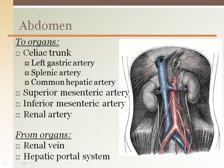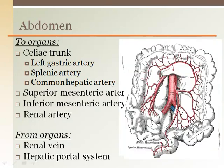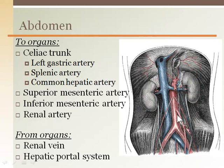From the descending aorta, blood travels toward the abdomen and becomes the abdominal aorta once it passes through the diaphragm. The first main branch off the abdominal aorta is the celiac trunk, which is only about an inch long and immediately divides into three arteries: the left gastric artery serving the stomach, the splenic artery bringing blood to the spleen, and the common hepatic artery going to the liver. Further down are the superior and inferior mesenteric arteries supplying oxygenated blood to the intestines. Between the two mesenteric arteries is the branch point for the renal arteries, which deliver blood to the kidneys.